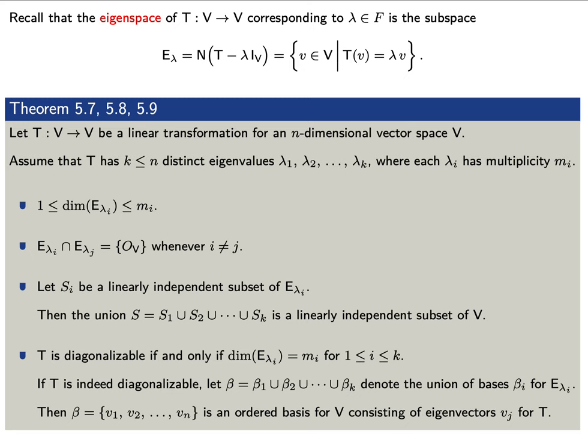Indeed, if t is diagonalizable, then we can let beta be the union of the bases for each of the eigenspaces E sub lambda i. Then beta is an ordered basis consisting of the eigenvectors of t.